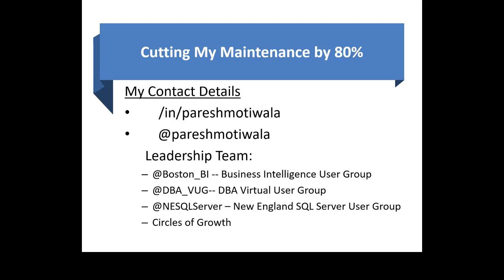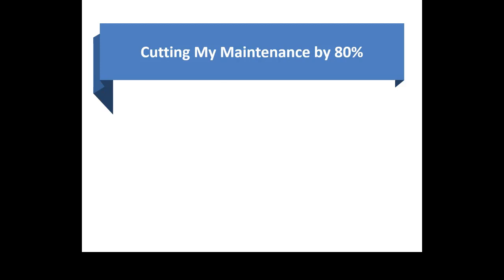What will we talk about today? Maintenance plans basically consist of backups. We'll talk about staggered backups, striped backups, and parallel backups — and you can use those with PowerShell. Then we'll talk about restores and how striped restores help us. There's nothing like staggered restores because restores are done on a need basis most of the time.